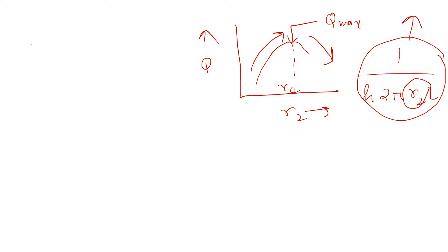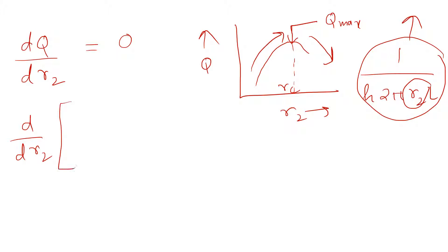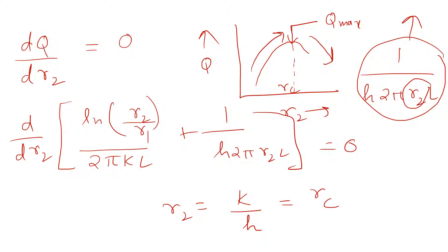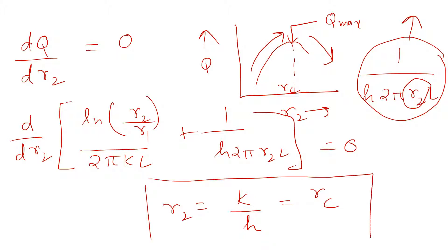At the critical radius of insulation, heat transfer rate is maximum. To find this point, we differentiate q with respect to radius r2 and equate it to zero. By differentiating the resistance terms and setting the result to zero, we get r2 = k/h. This value is our r_c, the critical radius of insulation.